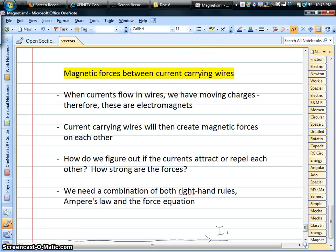Okay, we're back and we're doing some magnetism. In particular, we're going to look at what happens when you have multiple currents, multiple wires that carry current and they're parallel to each other.